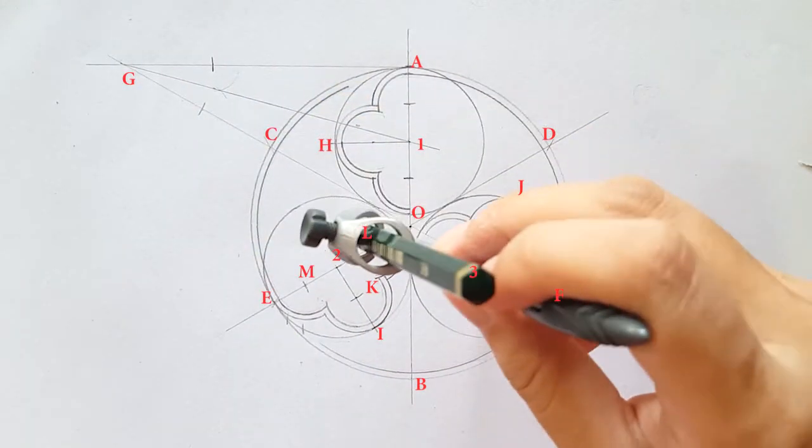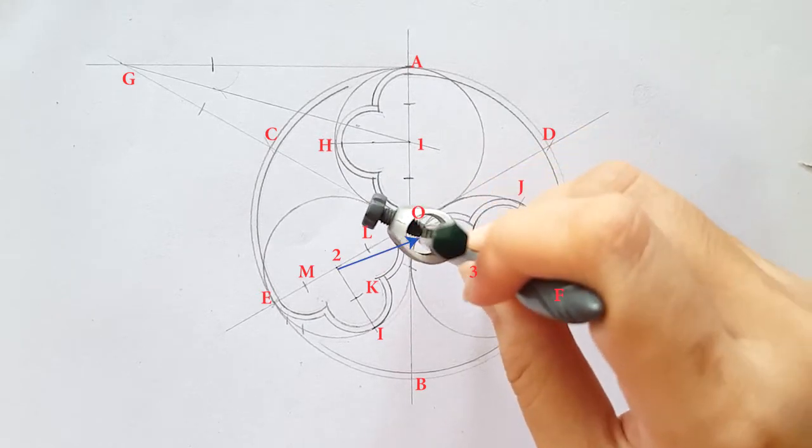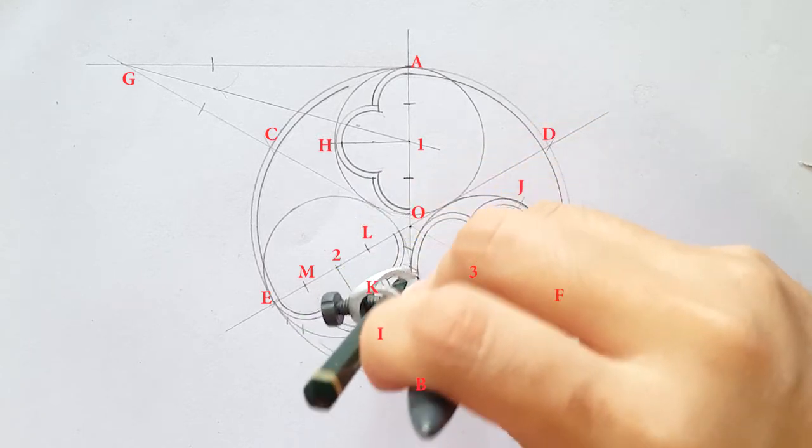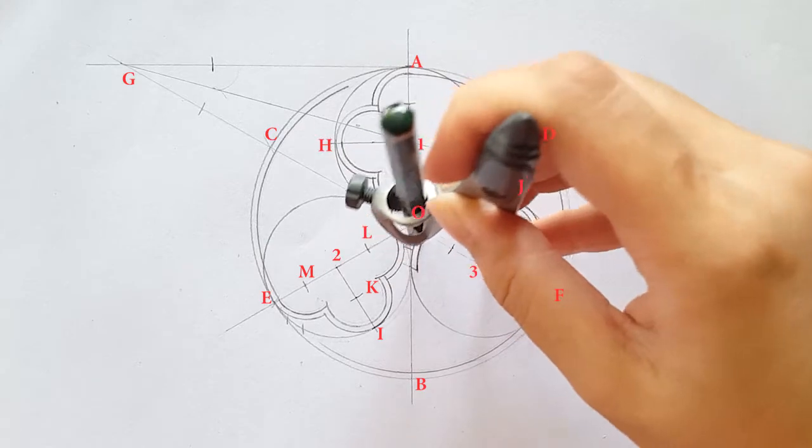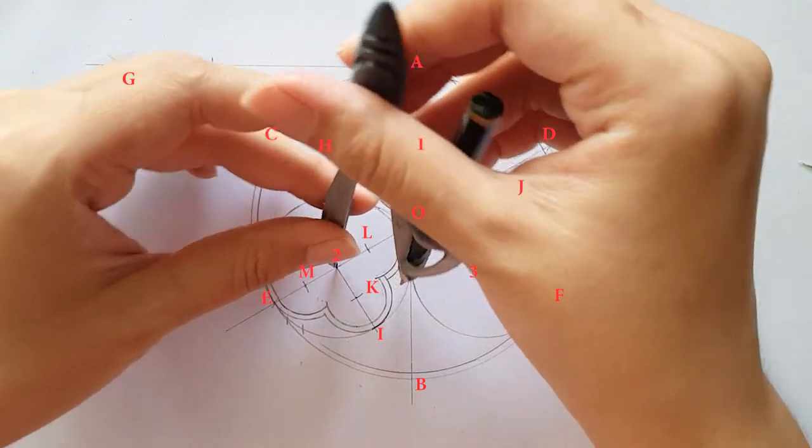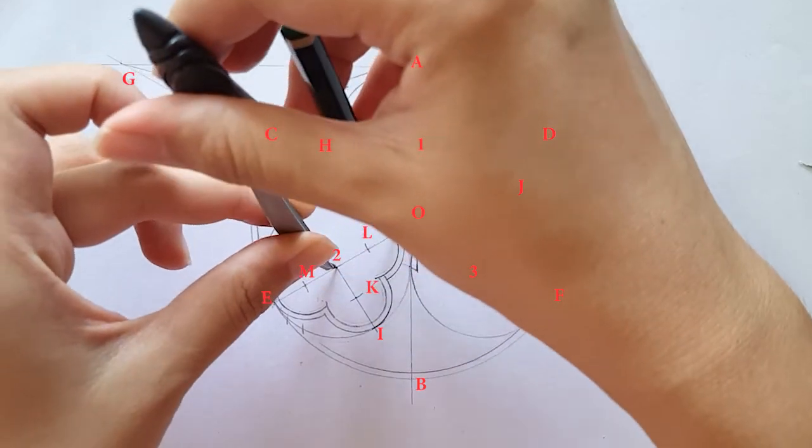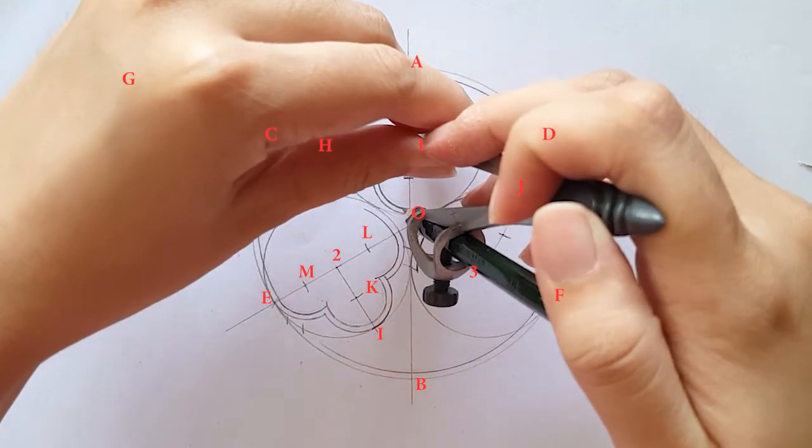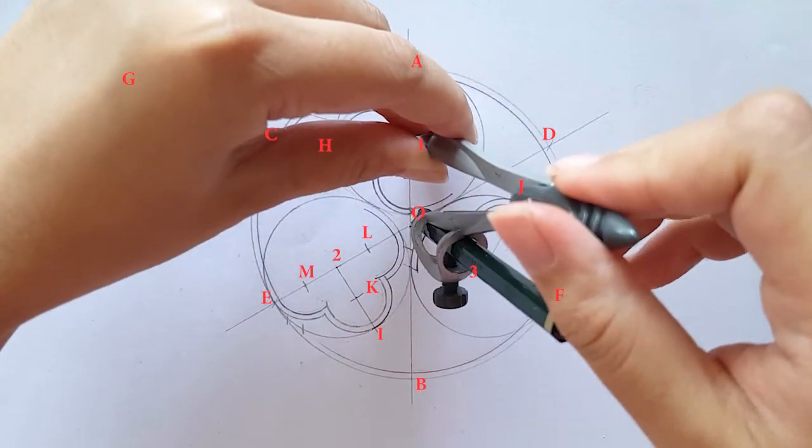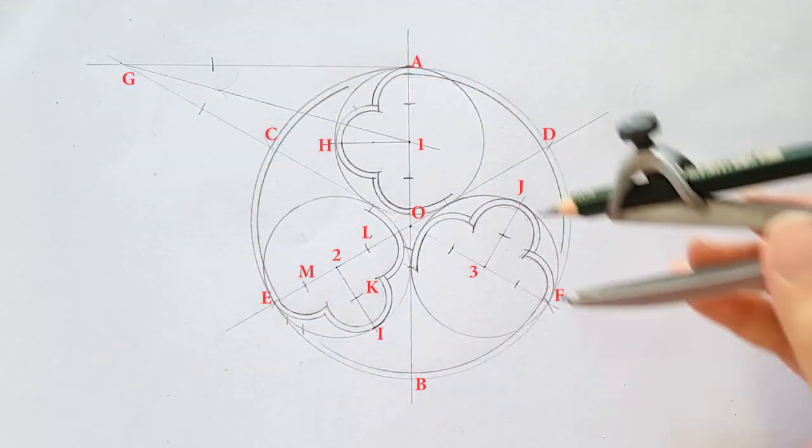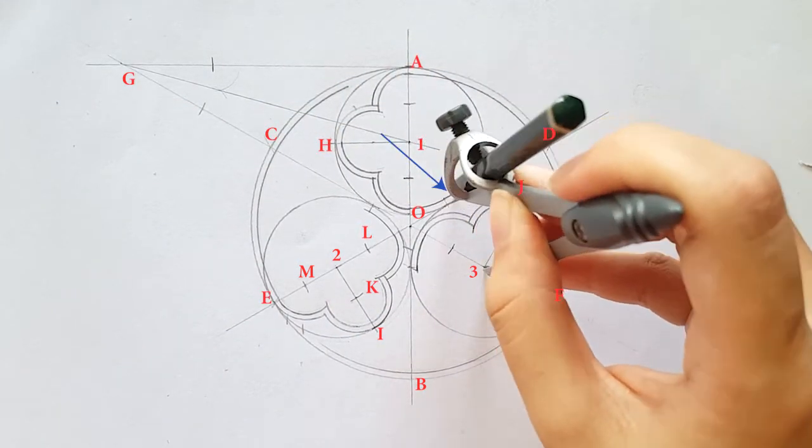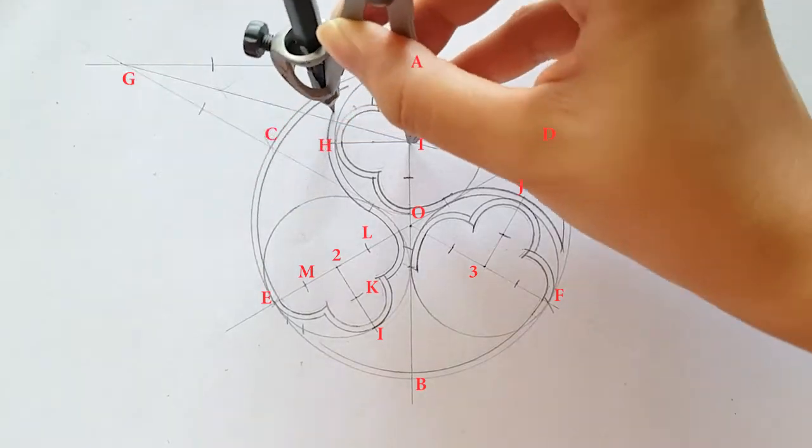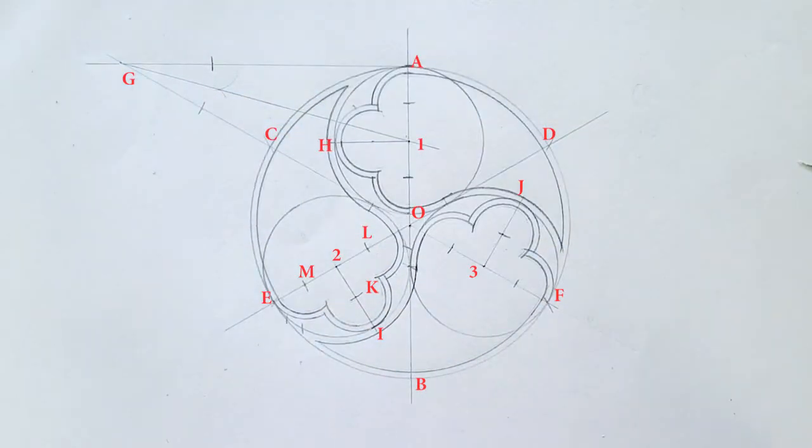Place your compass on point 1, 2, 3 and adjust to this point and extend outlines to a certain length. Now place your compass on these points and adjust to this point over here and complete the arc path. Repeat this step on the other points.